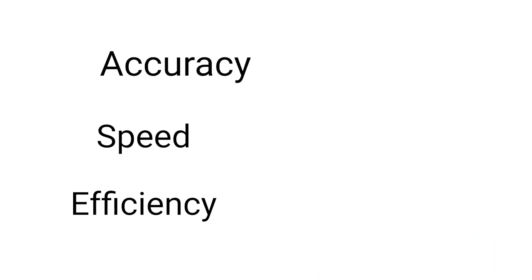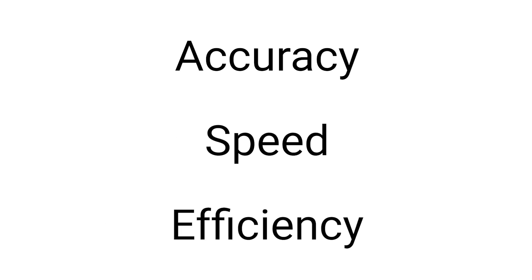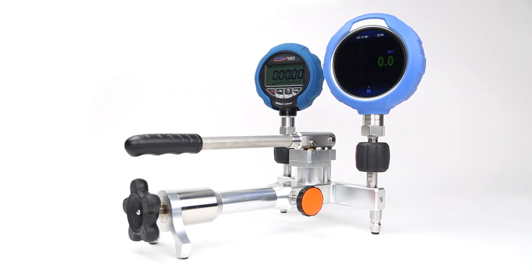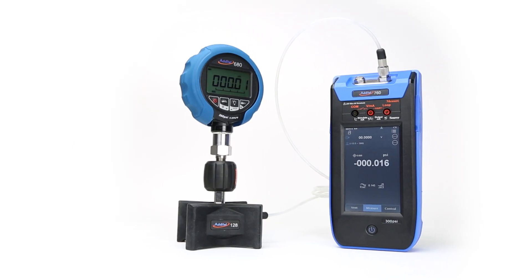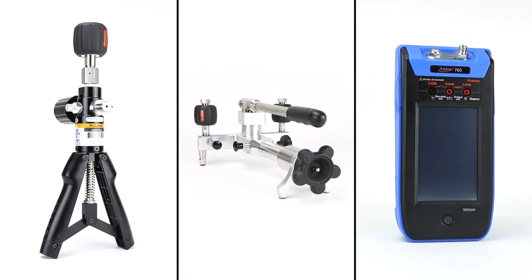In this video, we'll take a look at the differences in these parameters while calibrating a pressure gauge three different ways: using a standard hand pump and notebook, using an Adytel pump and 673 calibrator, and finally using an Adytel 760 automatic calibrator. Let's take a look at the setup for each.